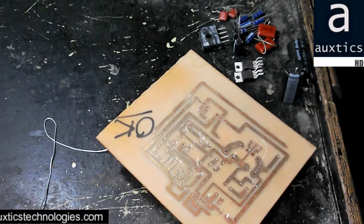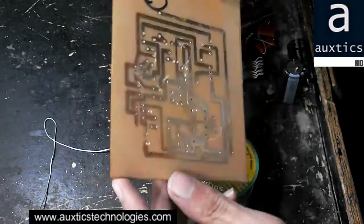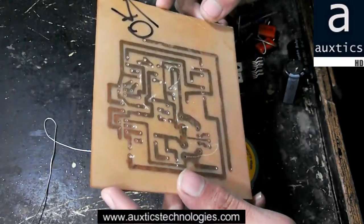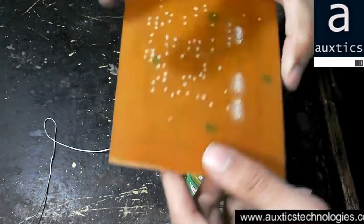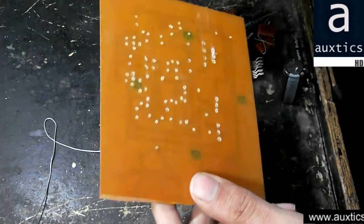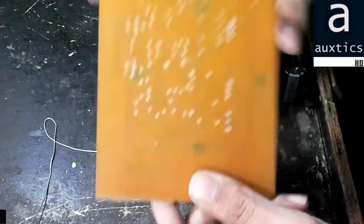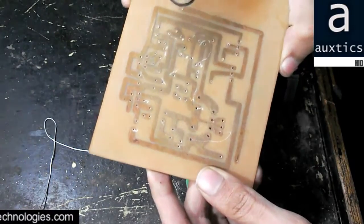So guys, this is the PCB board on which you will mount the components. This is the backside of the board on which the components will be mounted, and this is the PCB side of your board.